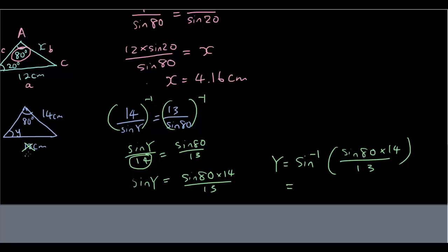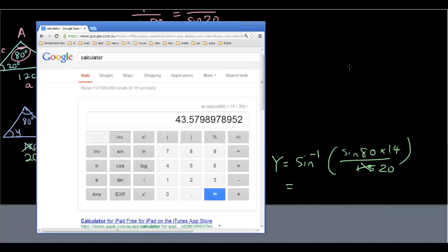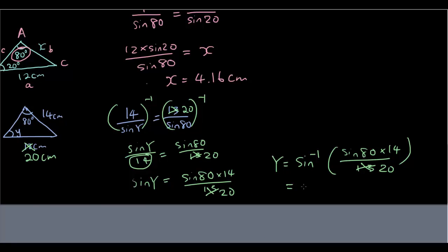And I'll just change all the 13 to 20. And putting that in the calculator, I have arc sine, which is the same as inverse sine. And inside the bracket, sine 80 times 14 divided by 20, I have 43.57. And that is the angle inside this triangle here.